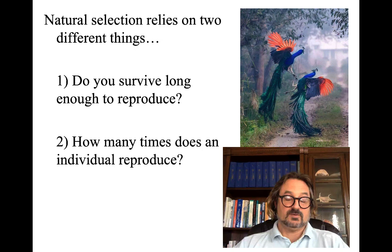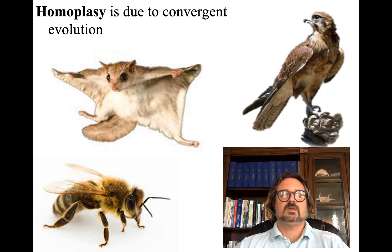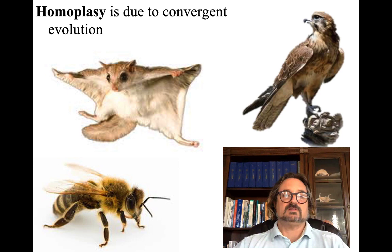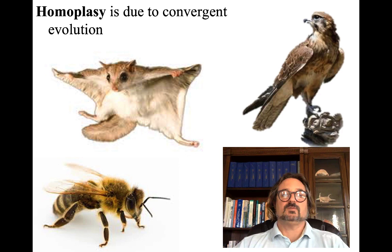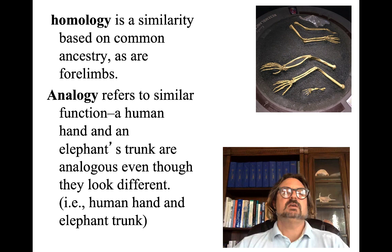Natural selection relies on two things: do you survive long enough to reproduce, and how many times does an individual reproduce? Homoplasia is due to convergent evolution — whenever species that are not related start to utilize the same adaptations, like the wing folds of a flying squirrel, the wings of a bee, and the wings of a hawk, all serving the purpose of allowing species to use air as transportation. However, they're not actually related. We call this homoplasia, an example of convergent evolution.